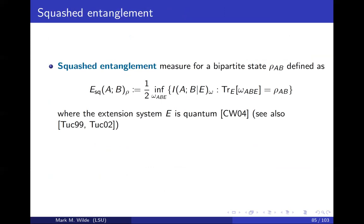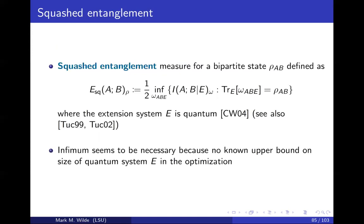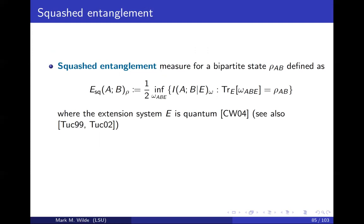Let's define the squashed entanglement. It's really just that you use the conditional mutual information: take an infimum over all possible extension systems E such that when you trace over E, you get back the state rho_AB of interest. You should think of conditional mutual information as measuring the correlations between Alice and Bob from the perspective of the eavesdropper Eve. We're thinking of all possible extension systems that Eve could possess to make the conditional mutual information as small as possible — 'squashed' because Eve is trying to squash down the quantum correlations that Alice and Bob possess.